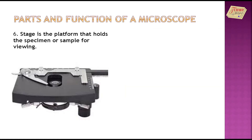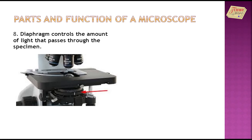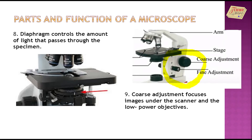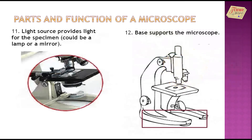Stage is the platform that holds the specimen or sample for viewing. Stage clips hold the specimen slides in place. Diaphragm controls the amount of light that passes through the specimen. Coarse adjustment focuses images under the scanner and the low power objectives. Fine adjustment focuses images under the high power and oil immersion objectives. Light source provides light for the specimen — it can be a lamp or a mirror. Base supports the microscope.